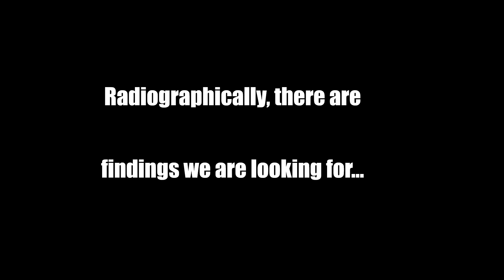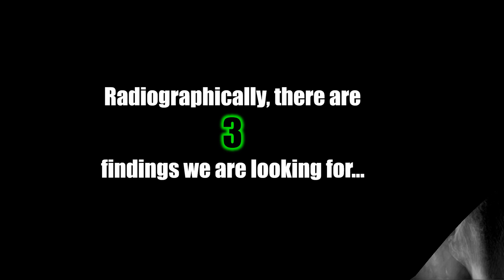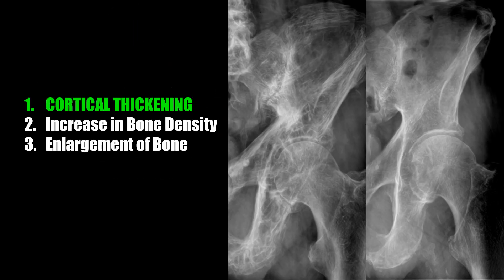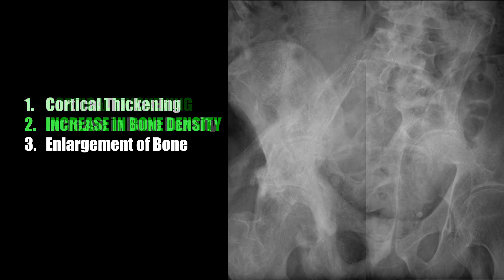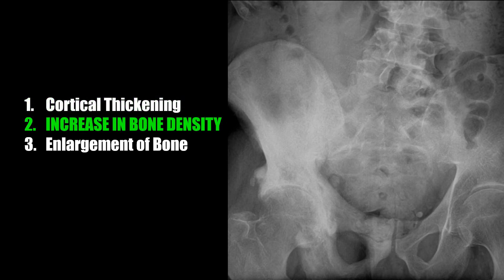Radiographically, when we're concerned with Paget's, there are typically three findings we're looking for. The first is cortical thickening, where the cortical bones and trabecular margins appear coarsened and thickened. The second is an increase in bone density.